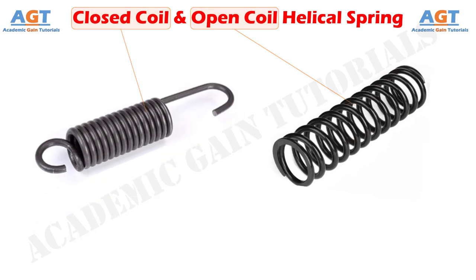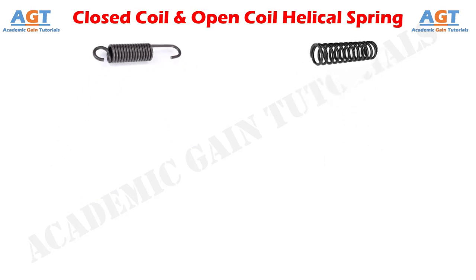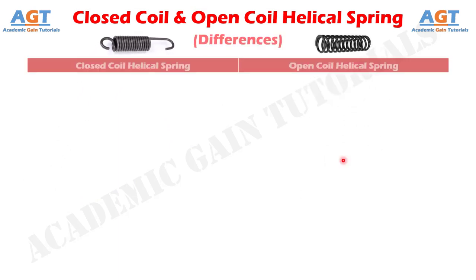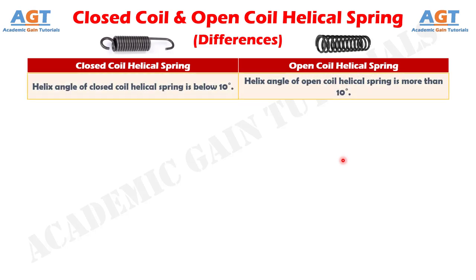So, let's look into the basic differences between closed coil and open coil helical spring in a tabular form. Difference number 1: the helix angle of a closed coil helical spring is below 10 degrees, whereas the helix angle of an open coil helical spring is more than 10 degrees.